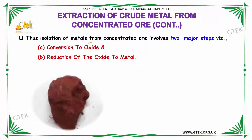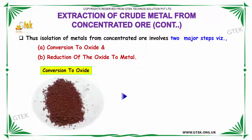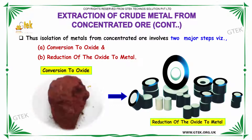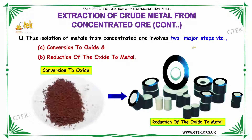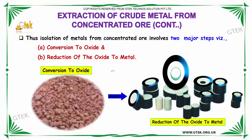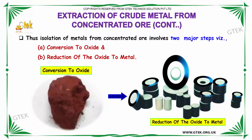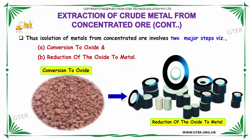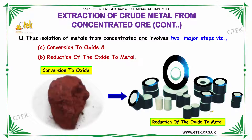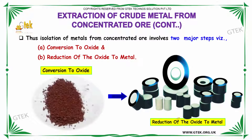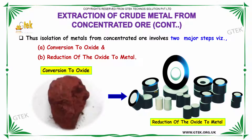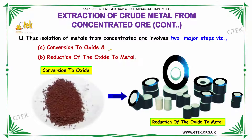The isolation of metals from concentrated ore involves two major steps. The first is conversion to oxide and the second one is reduction of the oxide to the metal. These are the two steps.